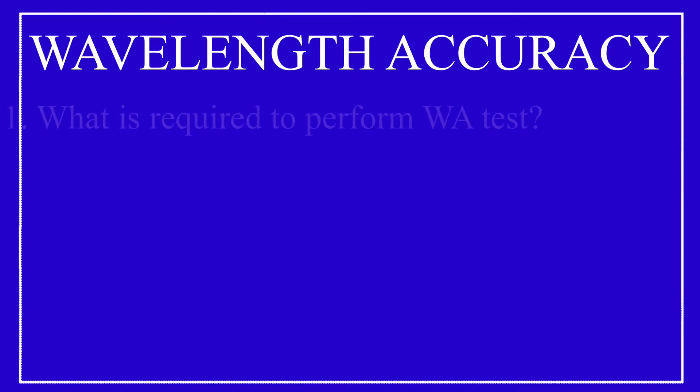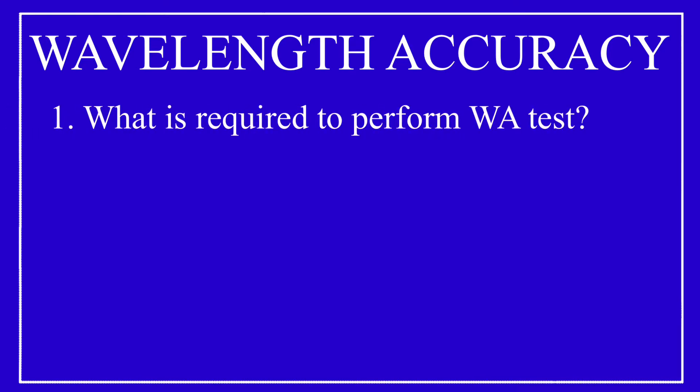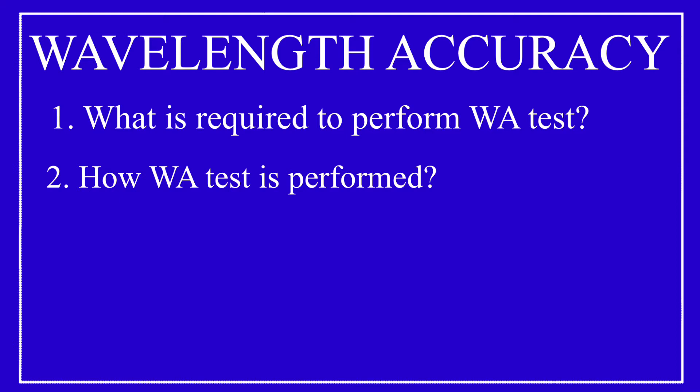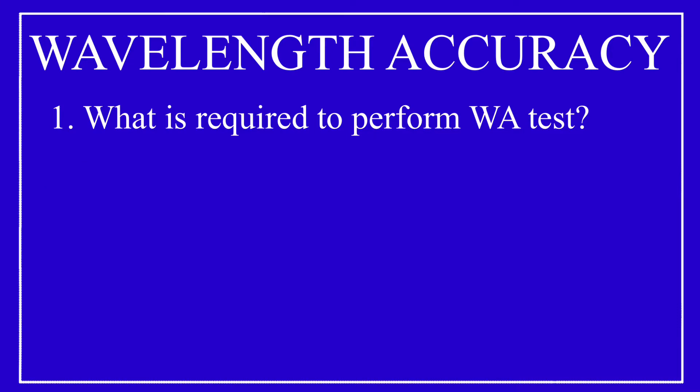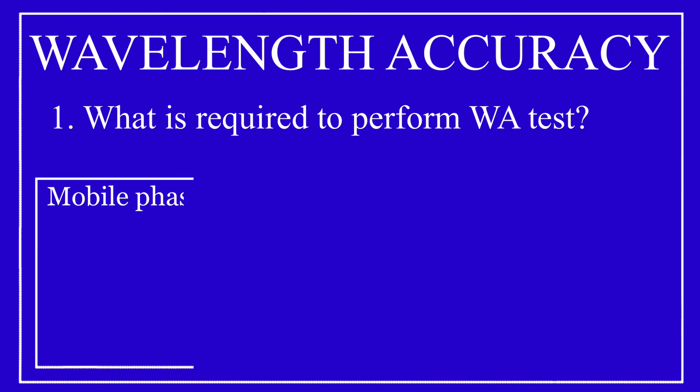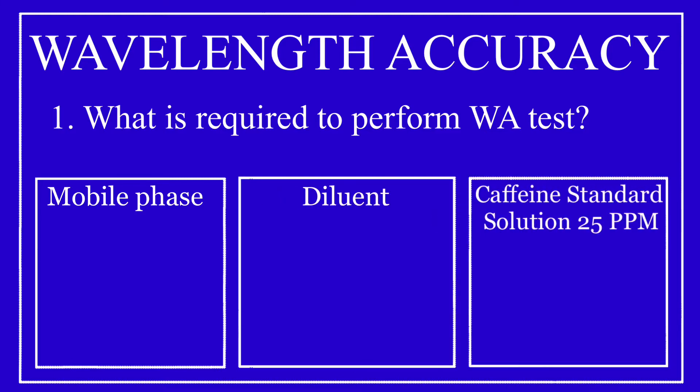In the wavelength accuracy test, we will learn three things: number one, what is required to perform the wavelength accuracy test; number two, how the wavelength accuracy test is performed; and number three, how it is decided whether the wavelength accuracy test is passing or failing. To carry out a wavelength accuracy test, we need mobile phase, diluent, and a caffeine standard solution.